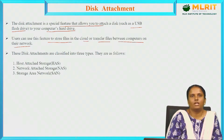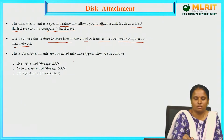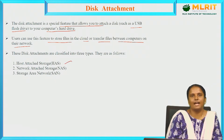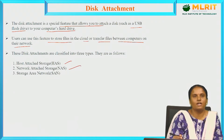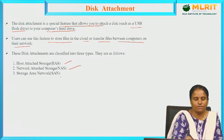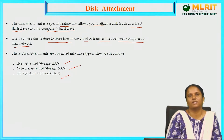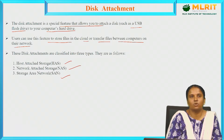Disk attachments are classified into three types. First one is host attached storage, second one is network attached storage, and third one is storage area network. These are the three types we use for disk attachment.